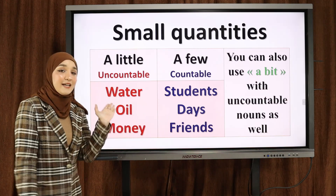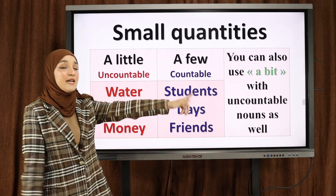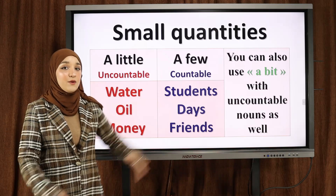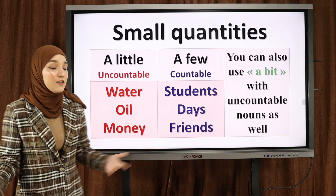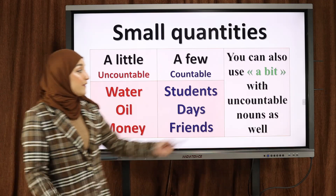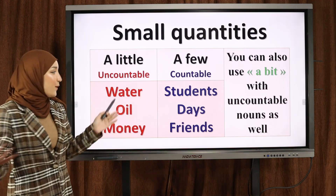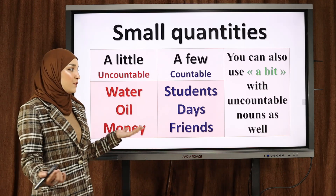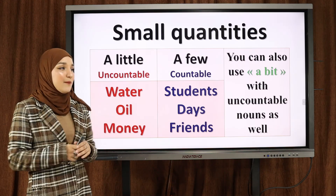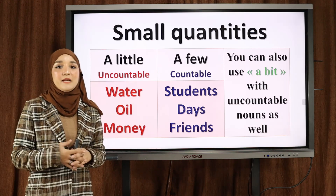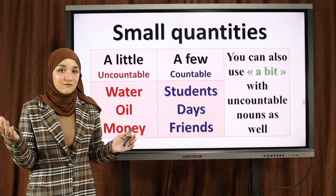A bit can replace a little — you can use a little or a bit, they have the same use — نفس الاستخدام ونفس المعنى. With uncountable nouns only — مع الأشياء الغير قابلة للعد. So I can say 'a bit of water'. For example: 'How much water do you drink?' — كم من الماء تشرب؟